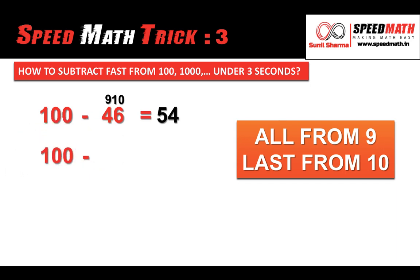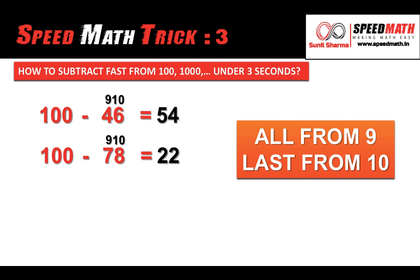Let's say this time we need to subtract 78 from 100. Check: number of zeros equals number of digits — yes it is. All from 9 and last from 10: 9 minus 7 gives you 2, 10 minus 8 gives you 2. The answer is 22.